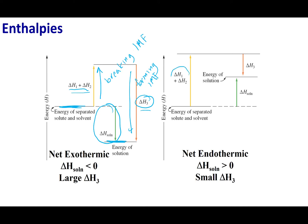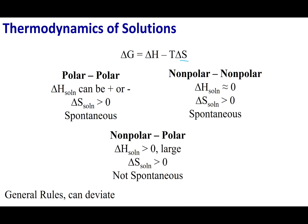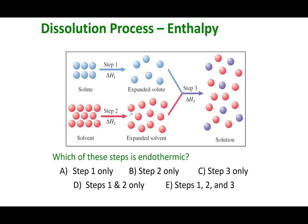There are three scenarios: polar with polar, non-polar with non-polar, and non-polar with polar. In all three, delta S of solution is positive — we go from ordered separate substances to a chaotic, jumbled mixture, which means entropy increases. Now let's consider delta H for each case.